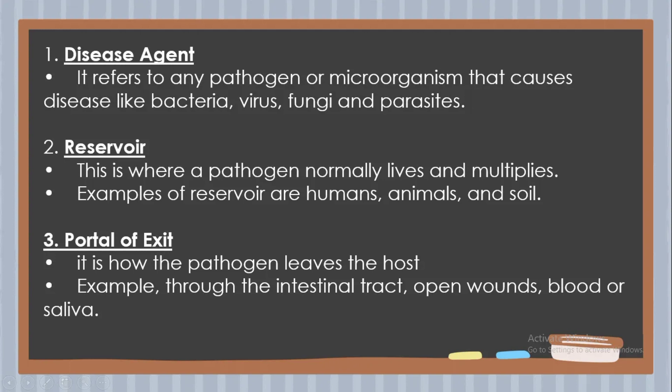The second element is the reservoir — where a pathogen normally lives and multiplies. Examples of reservoirs are humans, animals, and soil. The third element is the portal of exit, which is how the pathogen leaves the host. Examples include through the intestinal tract, open wounds, blood, or saliva.